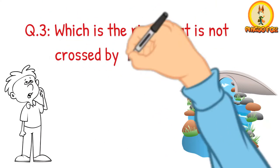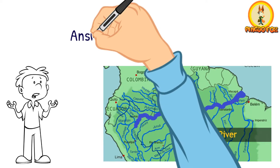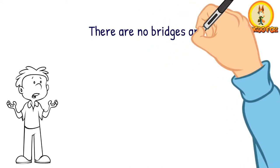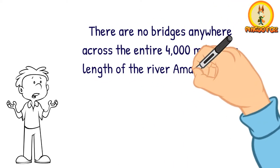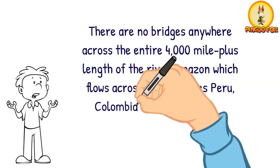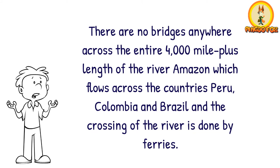Which is the river that is not crossed by any bridges? The answer is the Amazon River. There are no bridges anywhere across the entire 4,000-mile-plus length of the Amazon, which flows across the countries Peru, Colombia, and Brazil, and the crossing of the river is done by ferries.